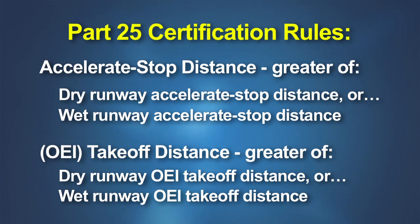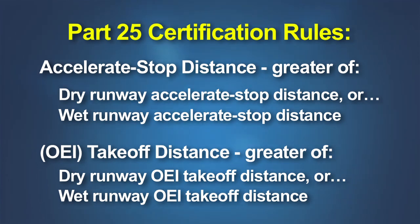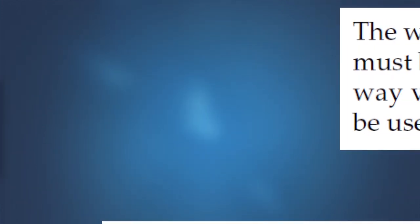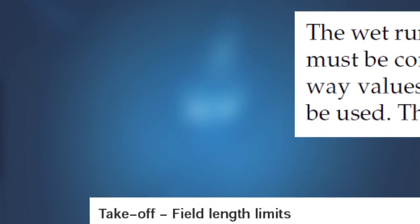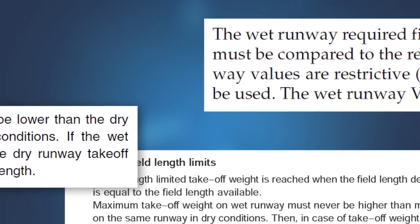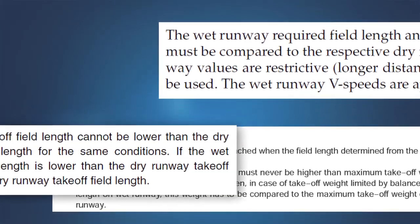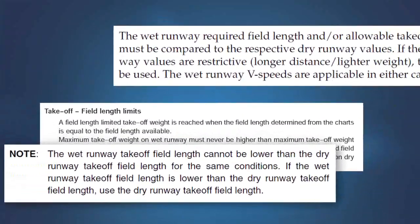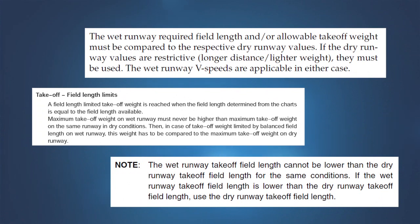These rules specify that the accelerate stop distance and the one-engine-inoperative takeoff distance must be the greater of either the dry runway or wet runway distances. This requirement is reflected in the instructions furnished in most FAA-approved airplane flight manuals where wet runway takeoff performance data is furnished. Users are advised to check the distances required or takeoff weight limits determined on a wet runway against those for a dry runway condition.